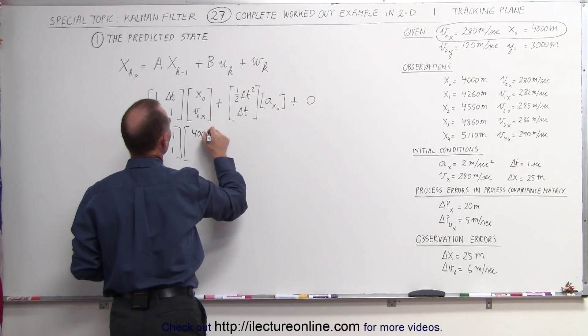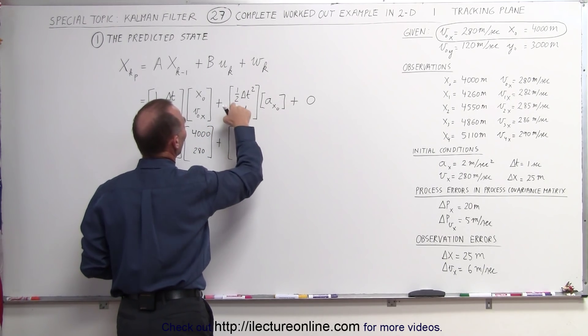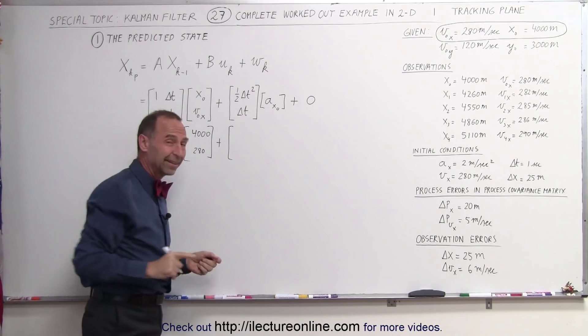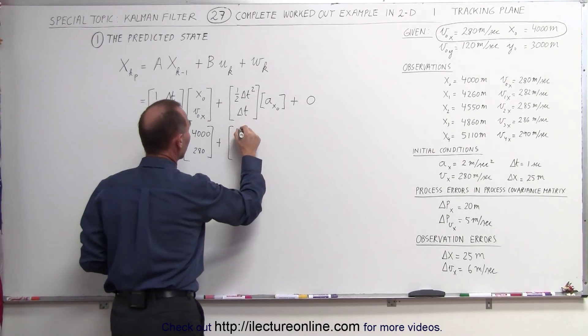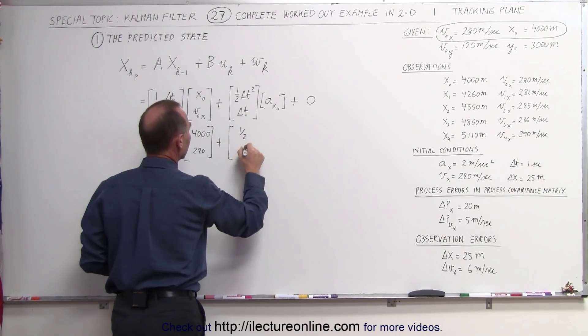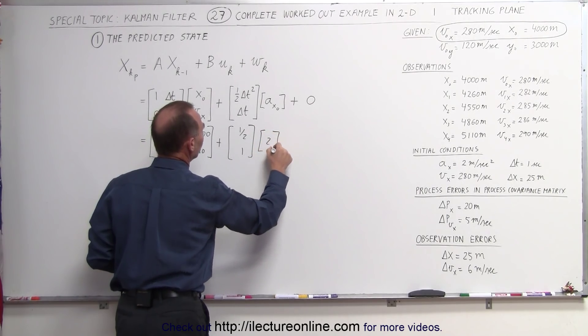4,000 for the position, and 280 for the velocity, plus the B matrix, 1 half delta t squared, delta t is 1, that means that becomes 1 half, and here delta t is 1, multiply it times acceleration matrix 2.